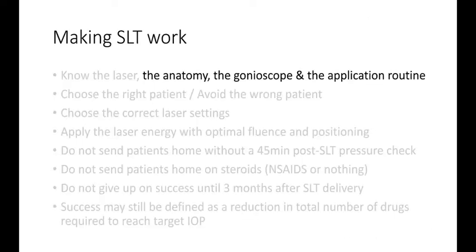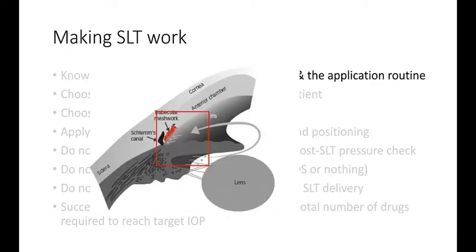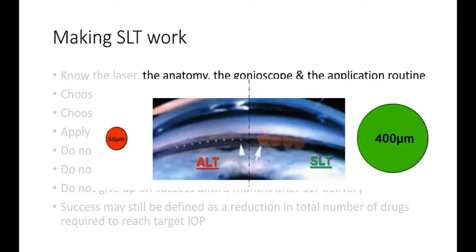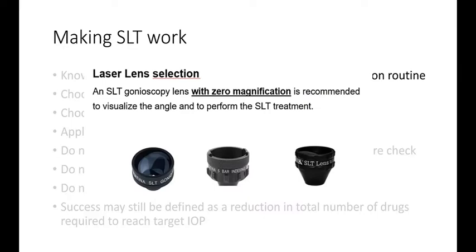Getting back to making SLT work, we need to know the anatomy. Seeing a simple diagram like this defies the complexity of managing to see the angle in difficult patients with difficult morphology and pigmented angles. Here is a schematic of a 400-micron spot in the angle versus the old 50-micron spot. This makes things a little bit easier for the user, knowing that 400 microns spans the angle. Getting to know your gonioscope is helpful in learning the angle, making sure that you have a zero-magnification gonioscope.